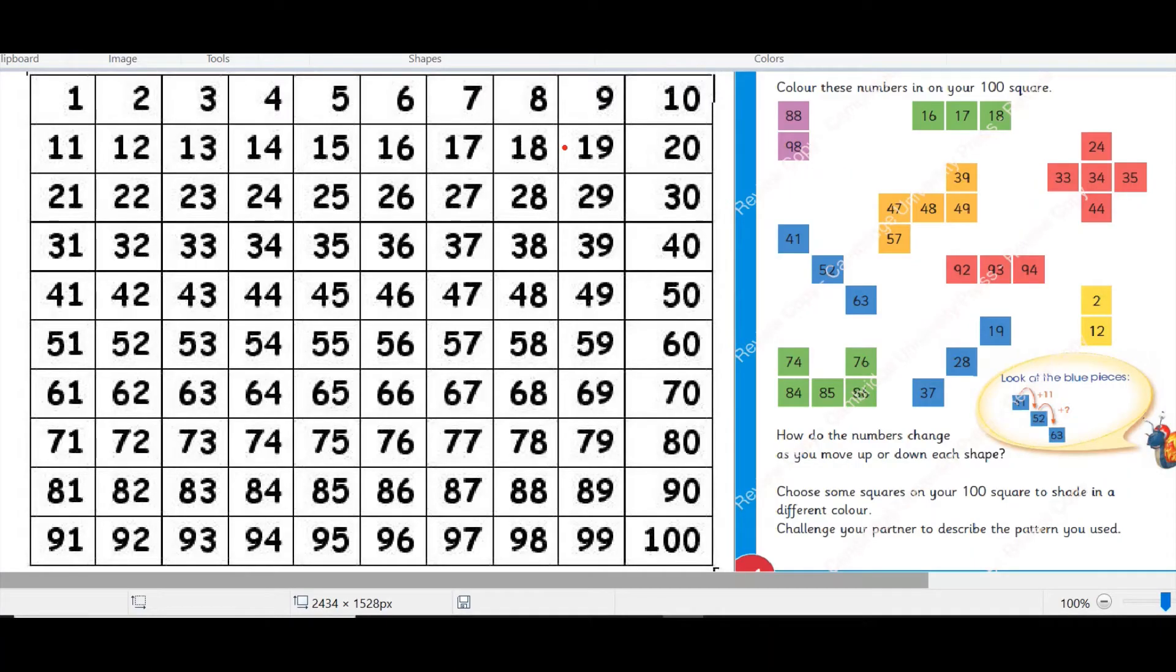Let's see where is the number 88 and 89. Sorry, 98. So number 88 is right here and number 98 is right here and then these numbers are 16, 17 and 18. These numbers are here. Okay students have to color these numbers on your number square.